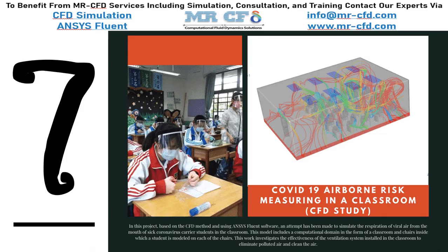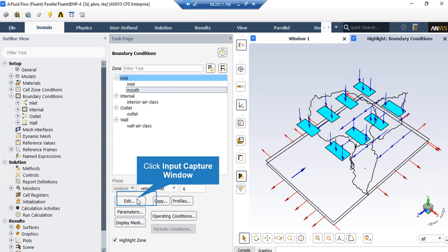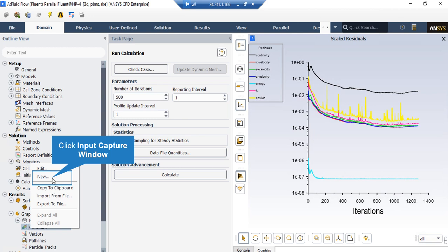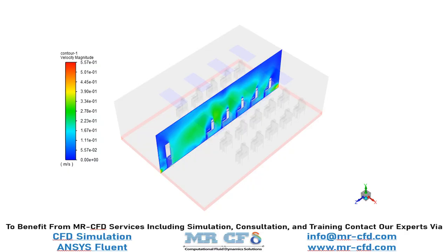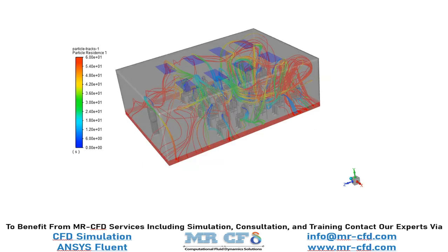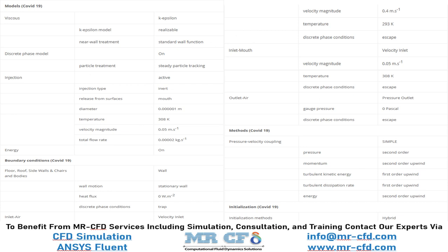In this project, we will perform COVID-19 airborne risk measurement in a classroom. By clicking on the mouth inlet boundary, you can see the type of this boundary is defined as velocity inlet, and by clicking Edit you can adjust the settings. After creating the plane, expand the graphics, go to contours, right-click and select New. In this slide, you can see the velocity distribution in the middle plane inside the computational domain, and the particle tracks injected through the mouths of the students. Finally, a summary of the different settings and setup used in this project is presented.